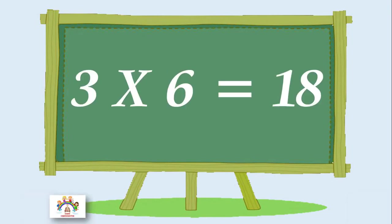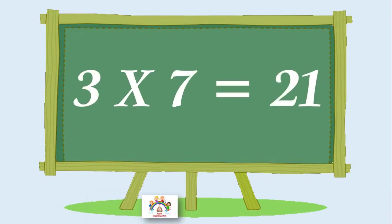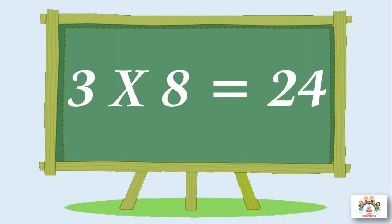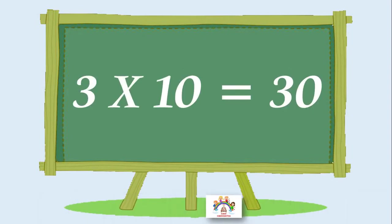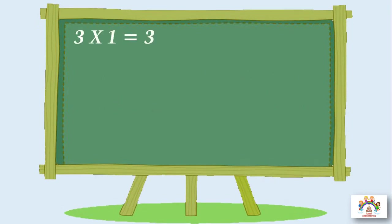Three sixes are eighteen, three sixes are eighteen. Three sevens are twenty-one, three sevens are twenty-one. Three eights are twenty-four, three eights are twenty-four. Three nines are twenty-seven, three nines are twenty-seven. Three tens are thirty, three tens are thirty.